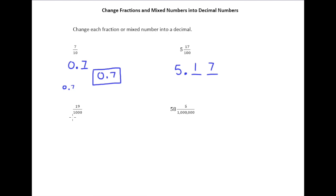Here's another example where we don't have a whole part, so I'm going to put 0 point. Now we look at the denominator — it's 1,000 — so I want my number to end in the thousandths place, which is 3 spaces over from the decimal point. But my numerator only has two digits, so I put those two digits as far to the right as I can so the 9 ends in the thousandths place. Whenever we have an empty space, we need to put a 0 there.